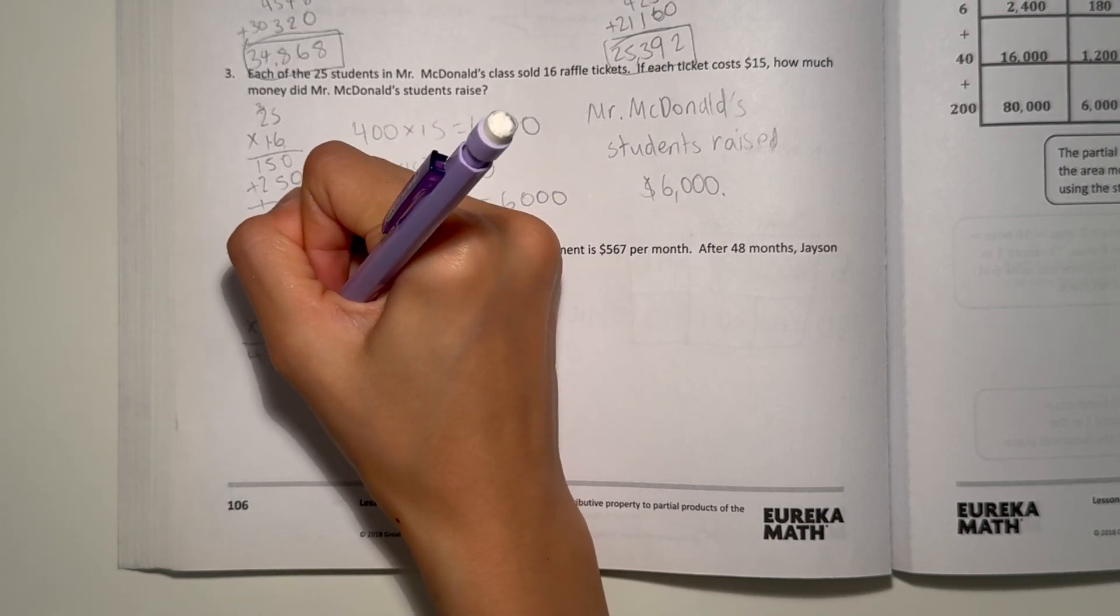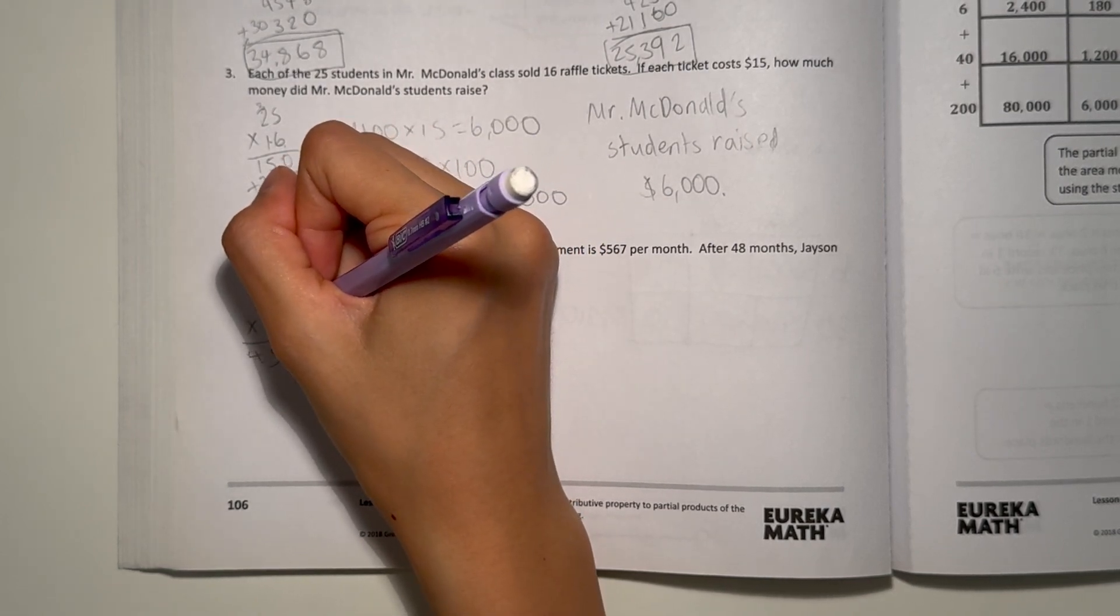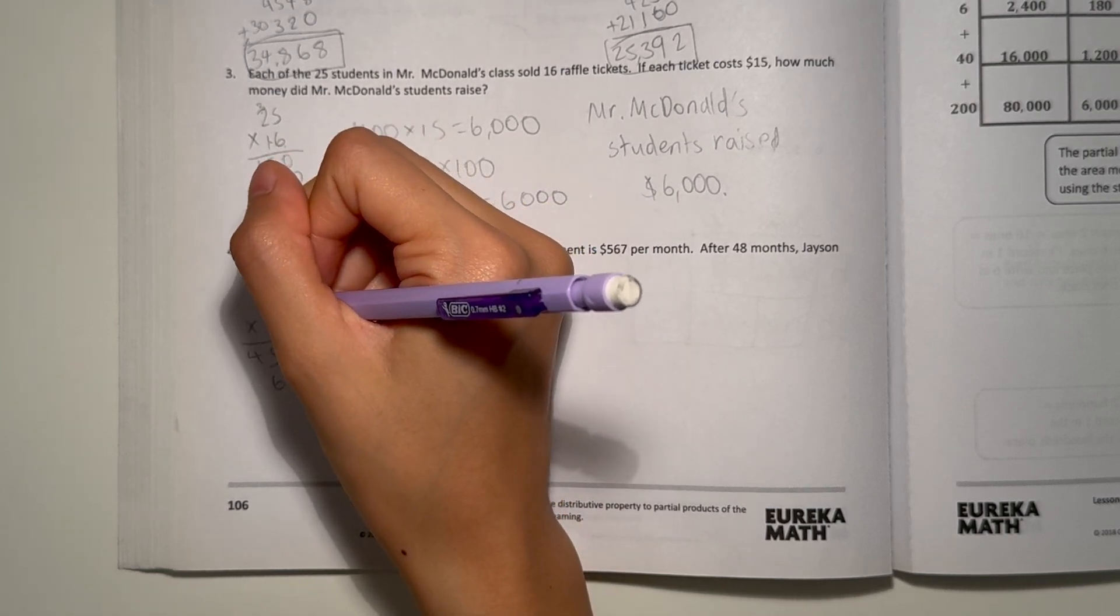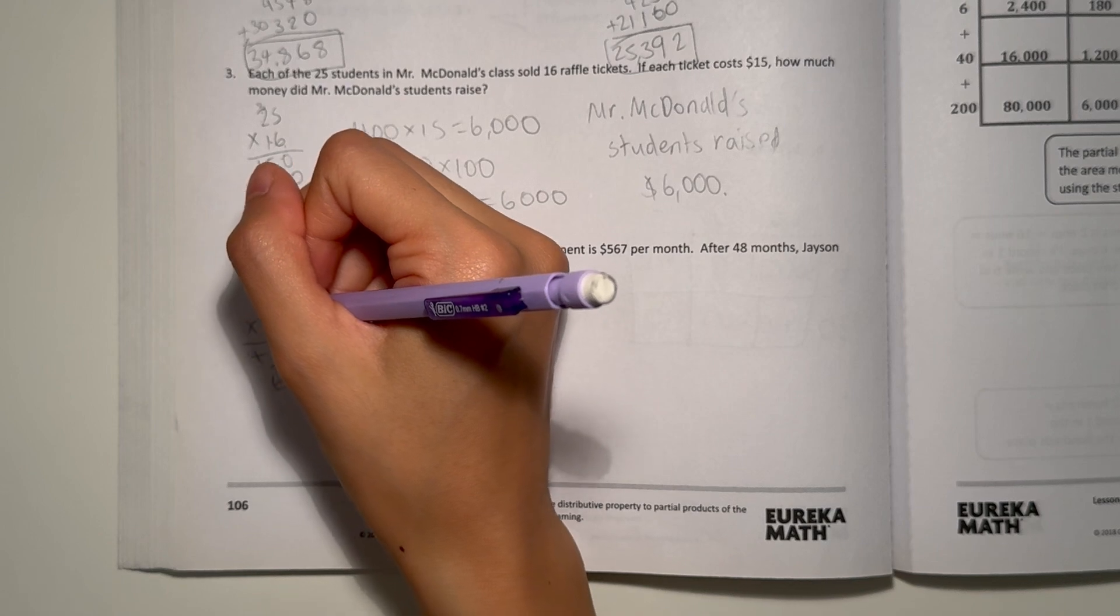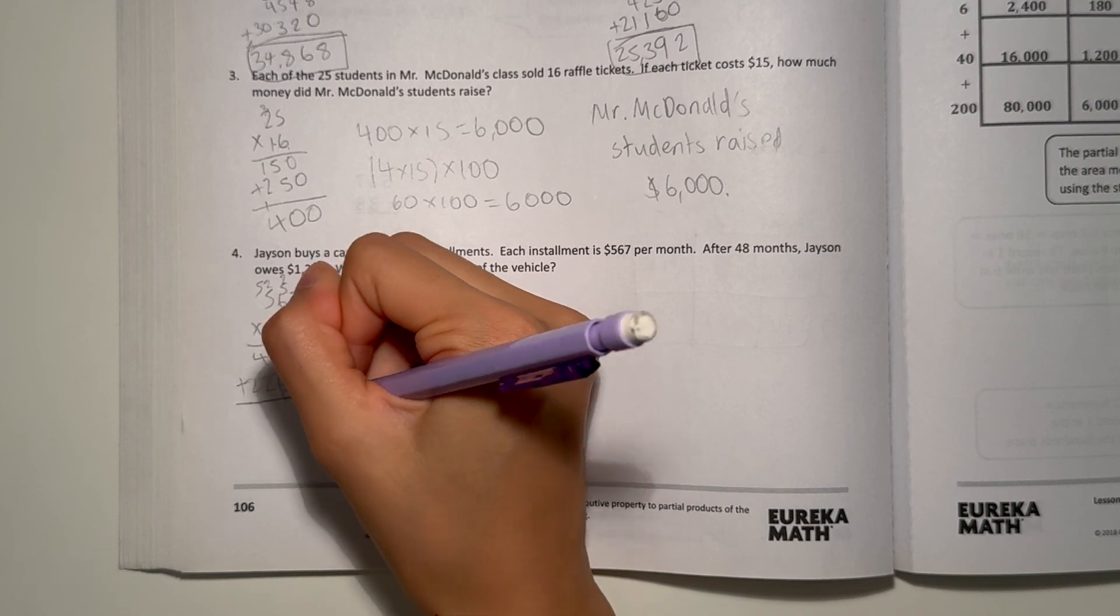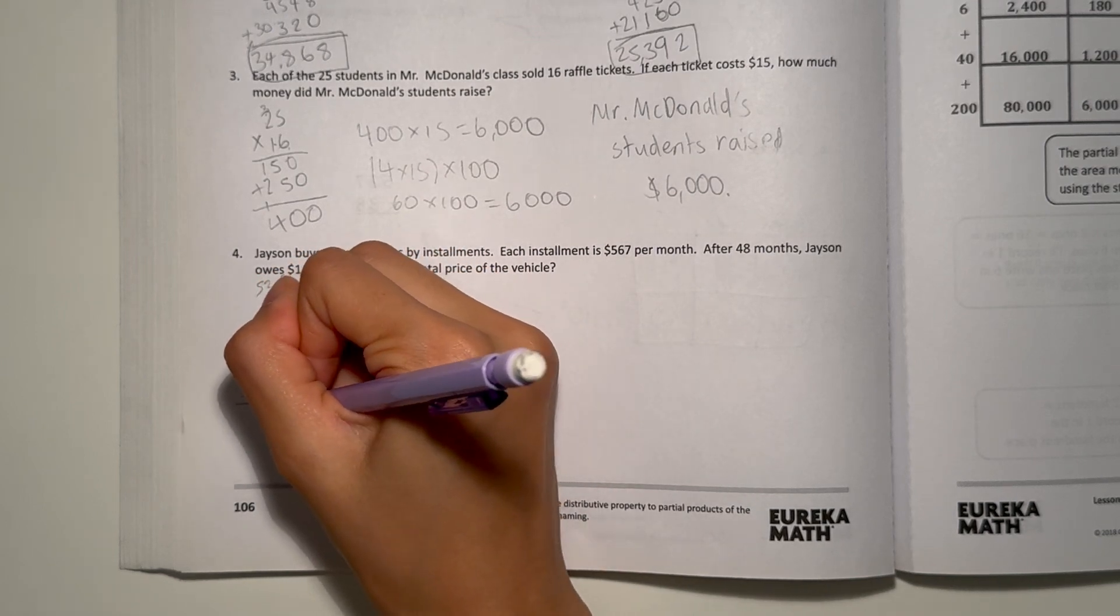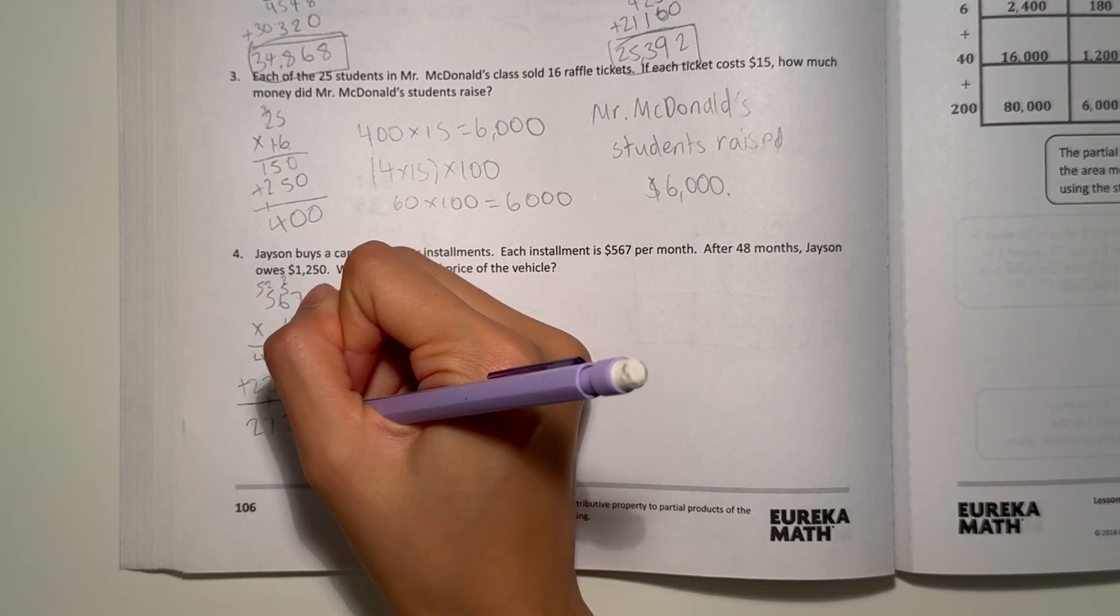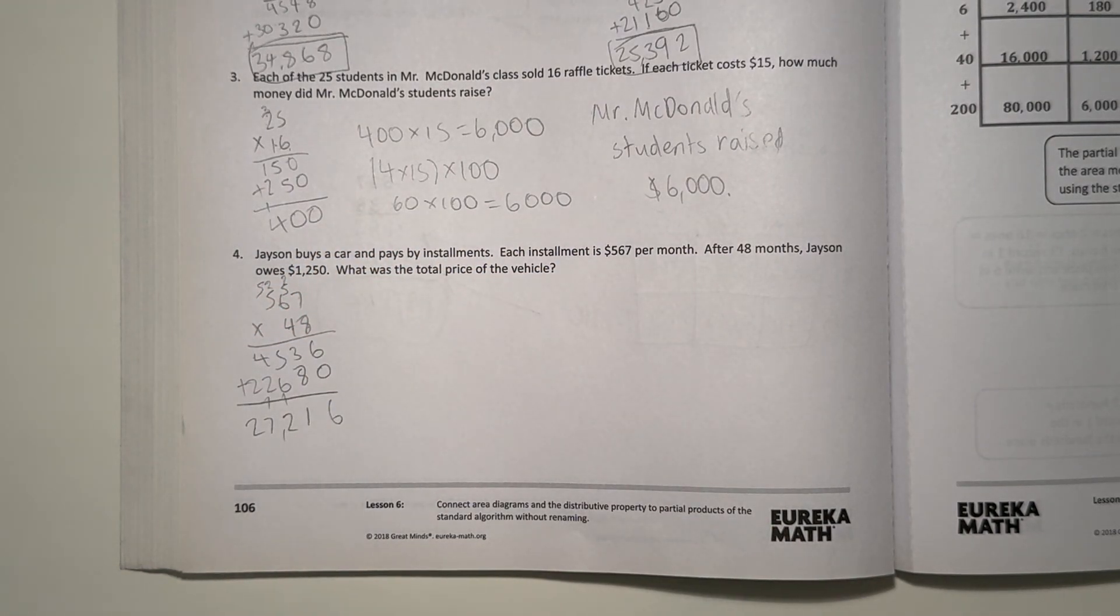7 times 4 is 28. 6 times 4 is 24. Plus 2 is 26. And 5 times 4 is 20 but then plus 2 is 22. Let's add 6, 11, 12, 7 and 2. 27,216.